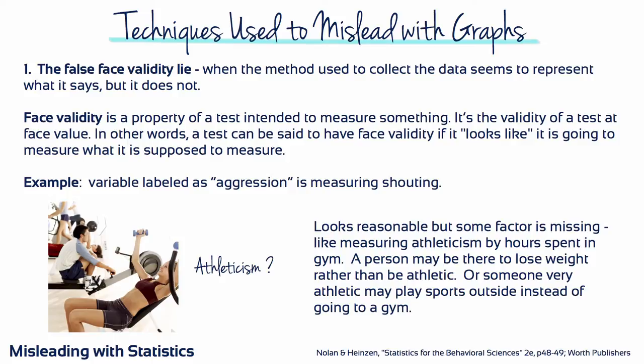A graph has a certain scientific aura, which makes us want to believe it. This makes us vulnerable to graphs that are actually misleading. Here are some of the most common ways to mislead viewers with statistical and graphic tricks. Number one: the false face validity lie. Face validity refers to whether the method used to collect data seems on the face of it to represent what it says it represents. False face validity occurs when the method seems to represent what it says, but when we dig a little deeper, it doesn't. For example, a variable might be labeled aggression, even though what is actually being measured is how many times people shout at each other.